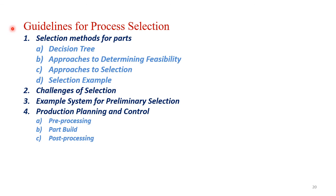Let us summarize what we have understood in this session. We got to know why these guidelines have to be followed for process selection in an AM process. The various methods covered are: selection methods for parts — including the decision tree, approaches to determining feasibility, approaches for selection, selection by examples, and challenges faced while selection. Then an example of a system for preliminary selection. After that, what has to be done for part completion in production: pre-processing, part building, and post-processing works. This completes the session on guidelines for process selection.